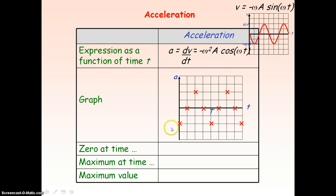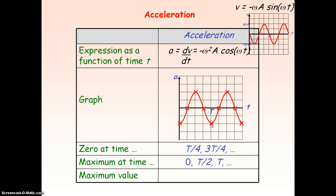Linking all these points together gives the minus cosine shape. From the graph, acceleration is zero at times of quarter period and three quarters of a period, and maximum at t = 0, half a period, and a whole period. From the equation, the maximum value of acceleration is given by ω²a, because the maximum value of cosine is one.